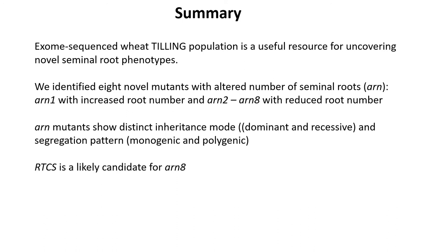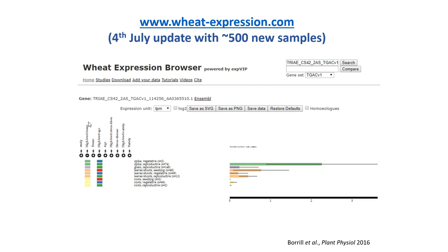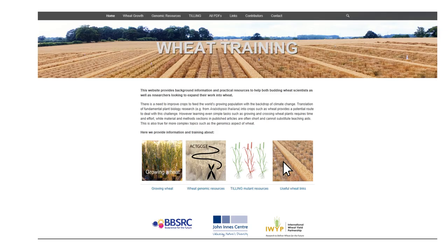To summarize: the exome-sequenced wheat mutant population is very useful for reverse and forward genetics of root architecture. We've identified mutants that will be very useful for studying root development, showing distinct types of genetic control and segregation. And RTCS is likely a candidate gene for wheat seminal root number. I'd like to acknowledge my lab members, Stefan Kepinski, and Ryan Kaya. For those new to wheat, we encourage people to work on wheat despite the genome size — there are useful websites for expression data and even a wheat training website if you want to learn more. Thank you very much.